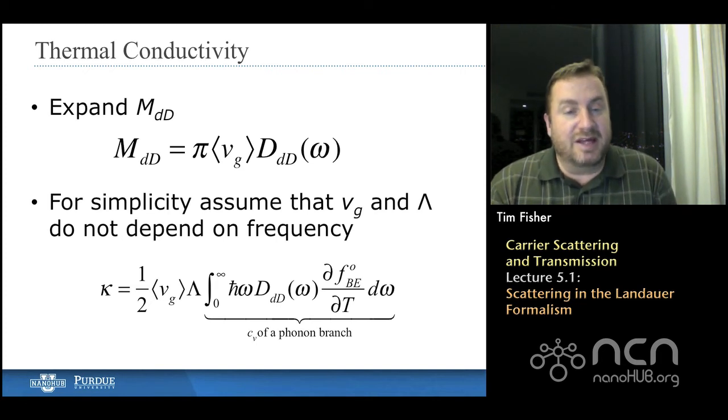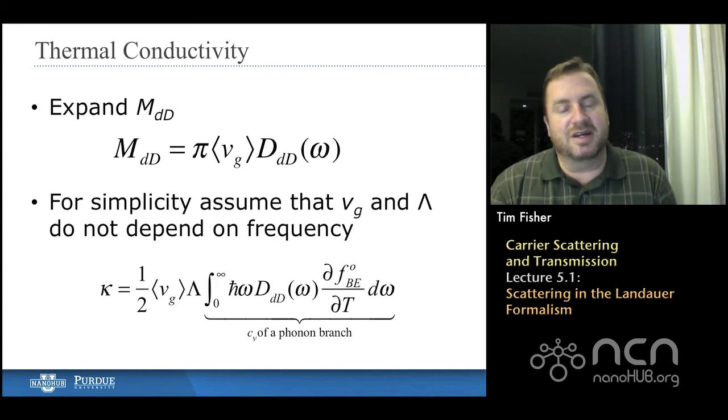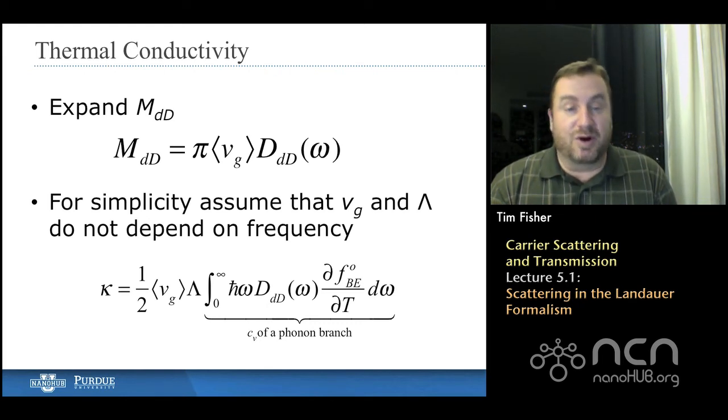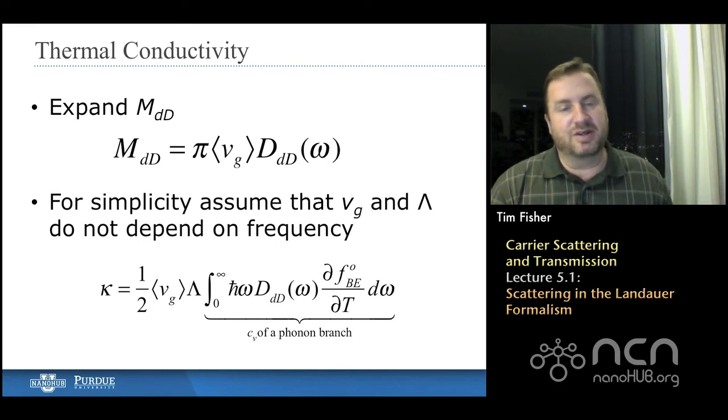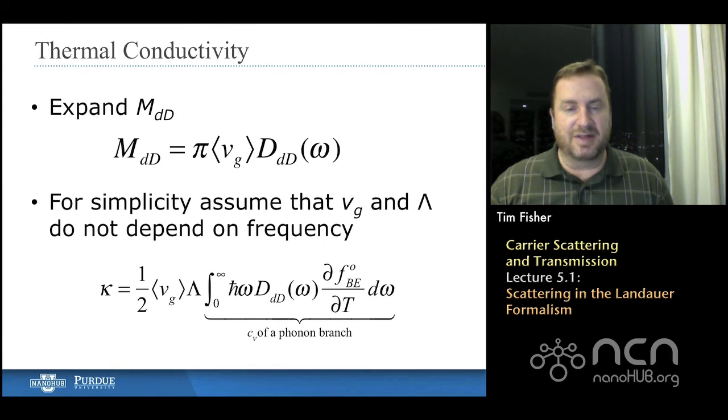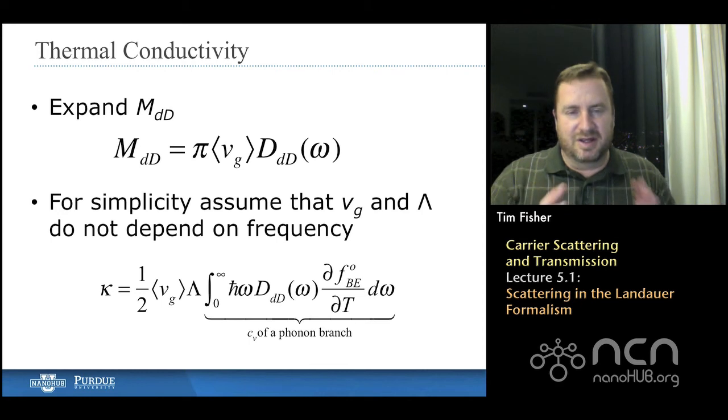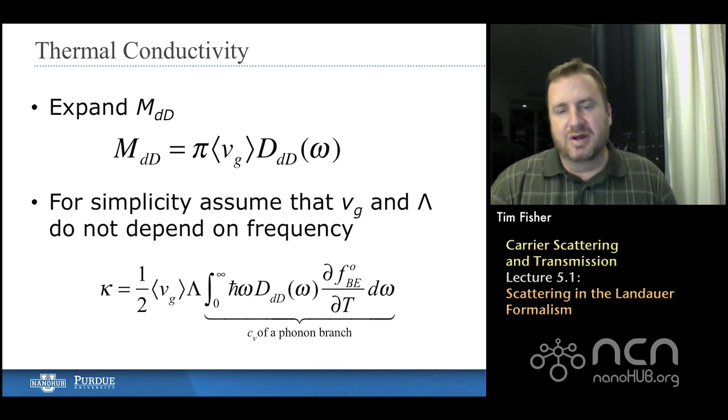And what we're going to do last is we'll expand this mode density term. That's m sub dd. And if you'll recall that, we found that it was actually the product of constant pi and the average group velocity and that average depended on dimensionality, multiplied by the density of states for the given dimensionality. And you'll notice that in this part of the lecture we're really focusing on phonons, but similar things apply for electrons where we would be doing these things in energy space instead of frequency space.